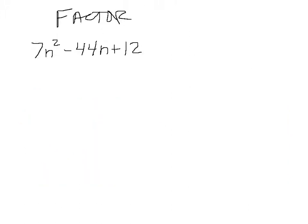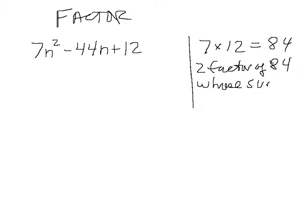Okay, so here we're looking to factor this one. And we do the same thing that we did before. We multiply 7 times 12 and we get 84. And what we'll want here is two factors of 84 whose sum is minus 44. So that means we're going to want two negative numbers, right?